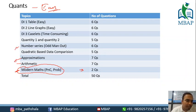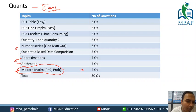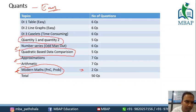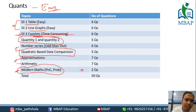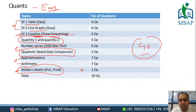No surprises this time. People who must have gone through our previous analysis would know. Some sets were a little time consuming but two sets were easy — table set and line graph. A good score to aim at is around 40 marks in this section.